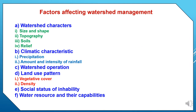There are different factors affecting watershed management programs. First, watershed characteristics, which depend on size and shape, topography, soils and relief. Second, climatic characteristics, like precipitation, rainfall and intensity. Third, watershed operations — the mechanisms, procedures and construction. Fourth, land use pattern, including vegetative cover and density of vegetation. Fifth, social status. Sixth, water resources and their capabilities. These are the factors which impact watershed management programs.